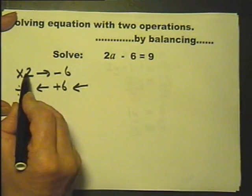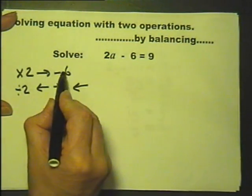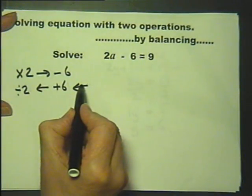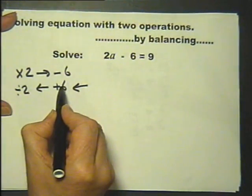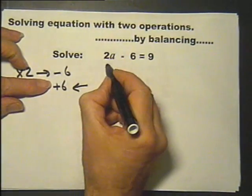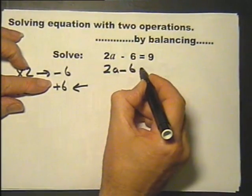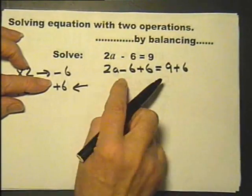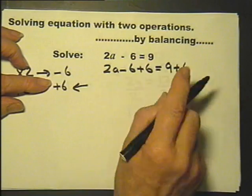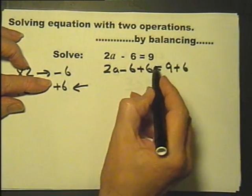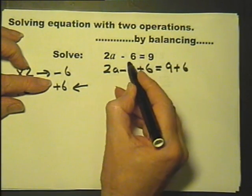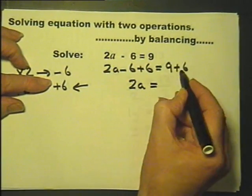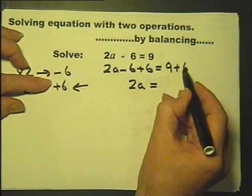But I do the inverse and in the opposite order so first I've got to add 6 to both sides. If I do it to that side I must do it to that side. Do it to the left side of the equation, do it to the right side of the equation. Work this out. This is 0. Minus 6 plus 6 is 0 so I'm left with just 2a plus 0 equals 9 plus 6.